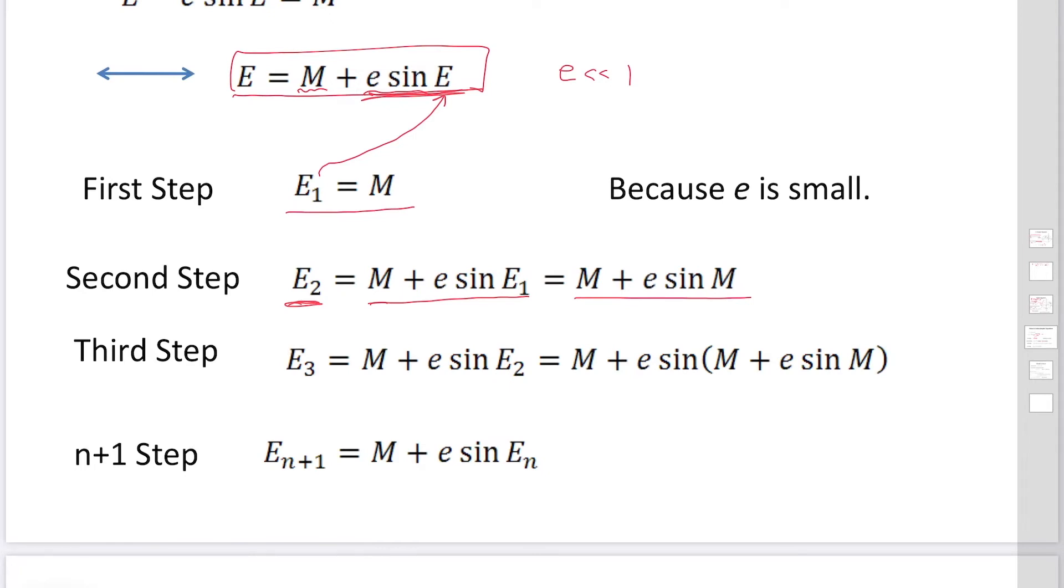Then for the third step, we substitute this E sub 2 to the original equation to find the third step approximate solution. And keep repeating the same step to improve the solutions. This is how to solve the Kepler equation in the approximate method.